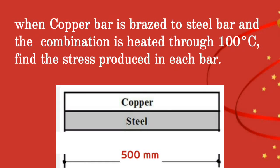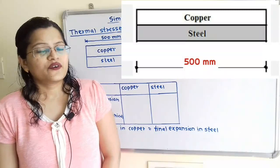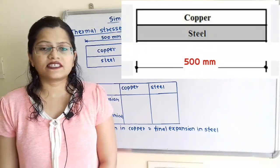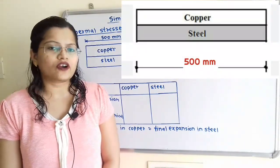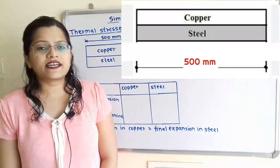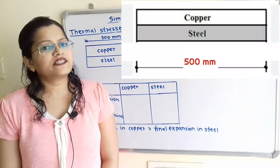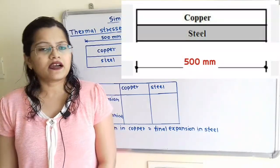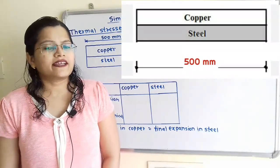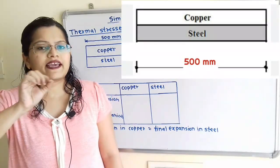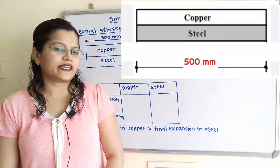Given question: when a copper bar is brazed to a steel bar and the combination is heated through 100 degrees Celsius, find the stress produced in each bar. We have to find out the stresses developed in copper rod and steel rod when they are rigidly connected at their ends. Temperature is increased by 100 degrees Celsius, so as there is an increase in temperature, the length of these rods is getting expanded.